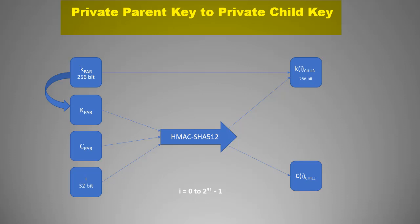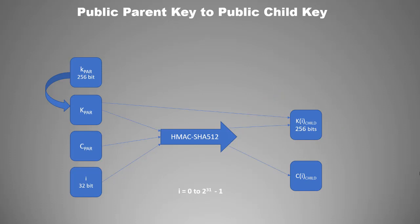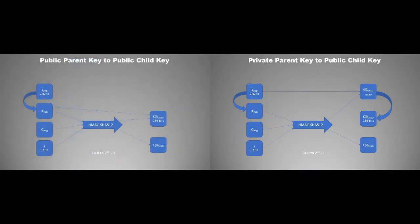Next, for private parent key to public child key derivation: you simply apply elliptic curve cryptography on the private child key to generate the public child key. Interestingly, there is a second method — the left-hand side 256-bit portion is added to the public parent key instead of the private parent key, and the resulting value is your public child key. In this method, you generate the public child key directly using the hash and the parent public key, without first generating a private child key. Both methods will give the same public child key if the value of the index is the same.